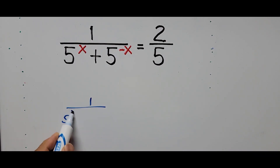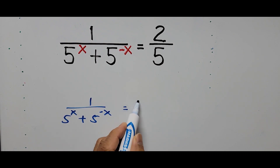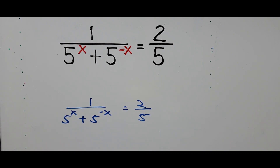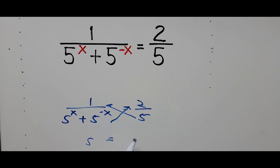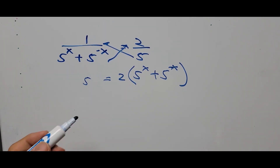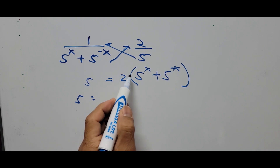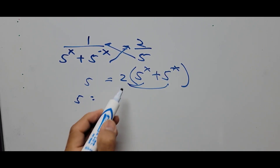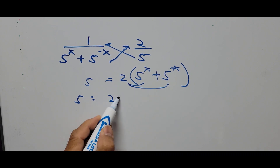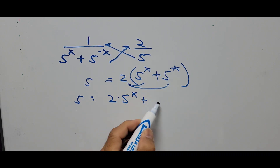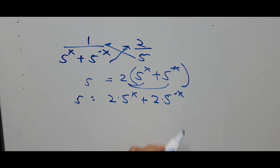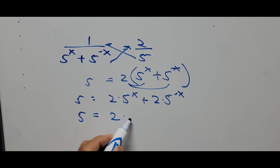Let's start solving. We'll write the equation again: 1 over 5 to the power x plus 5 to the power negative x equals 2 fifths. The next step is to cross-multiply all the terms. So 5 times 1 is 5, equals 2 times the quantity 5 to the power x plus 5 to the power negative x. Simplifying further using the distributive property, this is now 2 times 5 to the power x plus 2 times 5 to the power negative x.